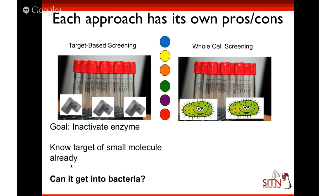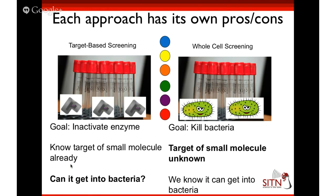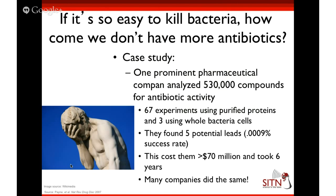Each of these approaches has its own pluses and minuses. For target-based screening, the goal is to stop the activity of your targeted protein. The benefit is that if the protein stops, you know there's a specific one-on-one interaction between the antibiotic and that protein. But the question remains: can you bring that into bacteria and would it still work? Whereas with whole-cell screening, if the bacteria die in the tube, you know it works and it's killing the bacteria — but in that case, you don't know why. It's a big black box.